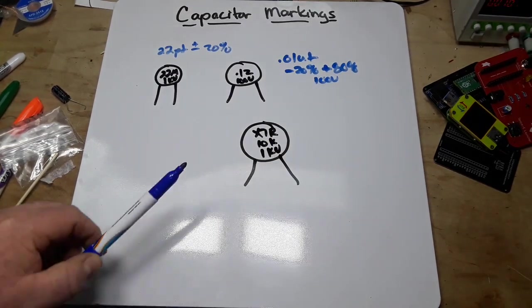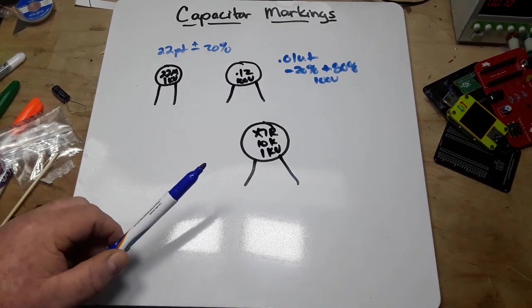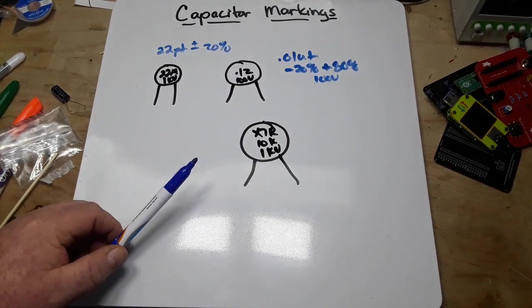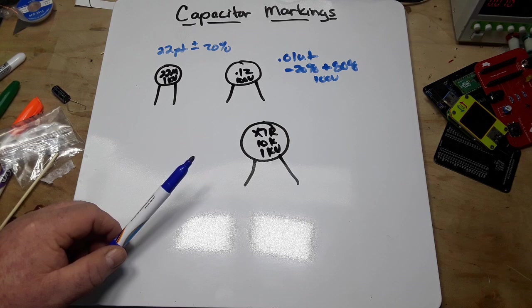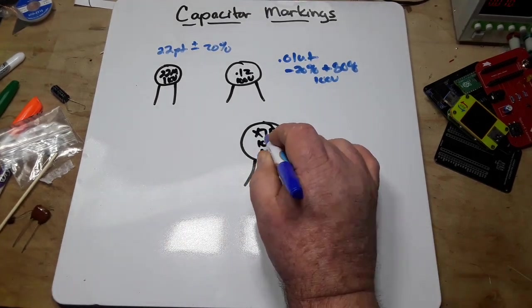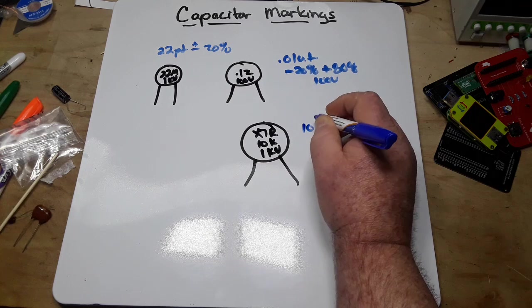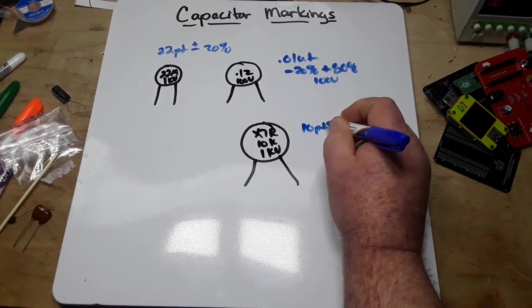Then we have this, which is the most confusing of all of them. So we have the X7R - that is, there's our 10K. So that is 10 picofarad.